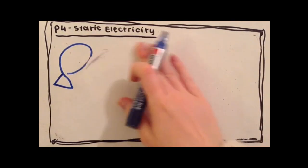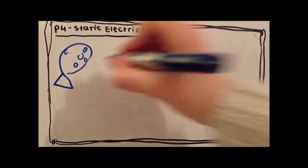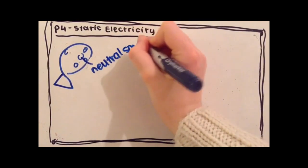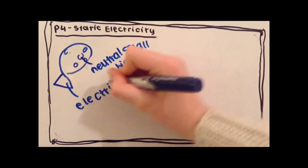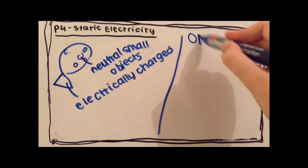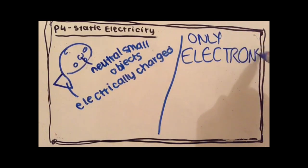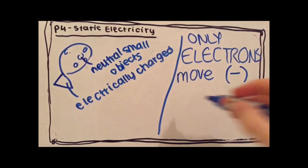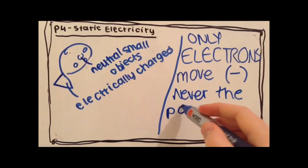Electrically charged objects attract small neutral objects placed near them. For example, a rubber balloon and little bits of paper. However, only the electrons move, never the positive charges.